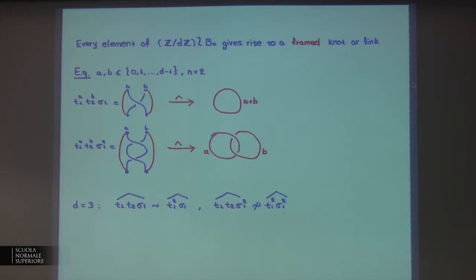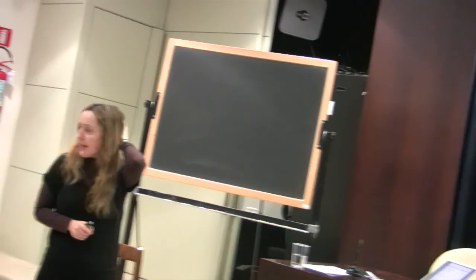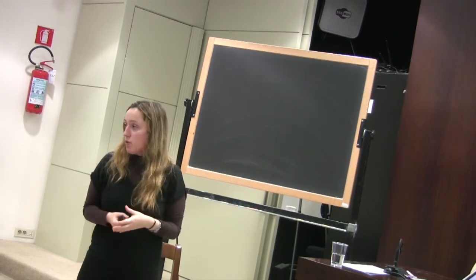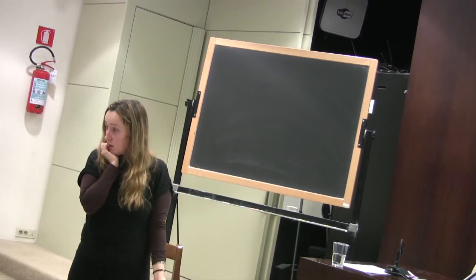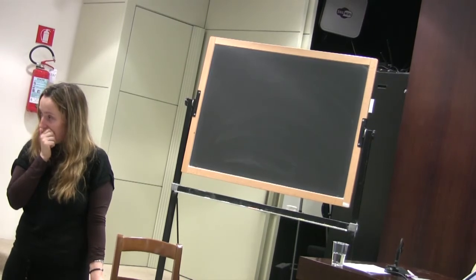Here we consider that equivalence of knots works as in the classical case and the weights are just numbers attached to them. A question arises about whether links are oriented. From a braid, you automatically get orientation — if you construct your link from a braid, it's automatically oriented and transformations preserve orientation.